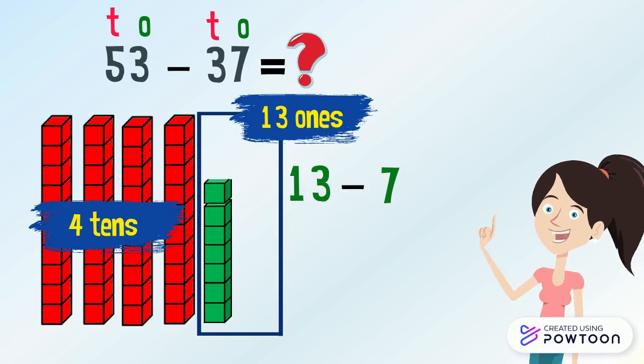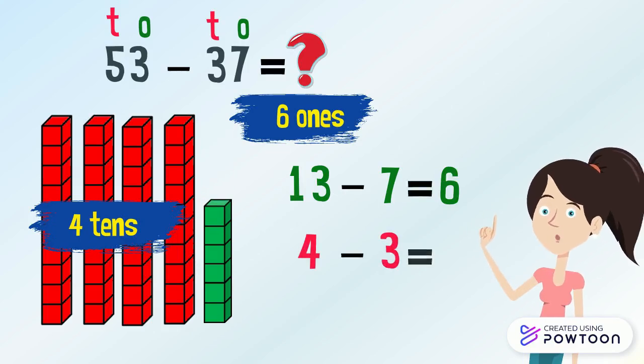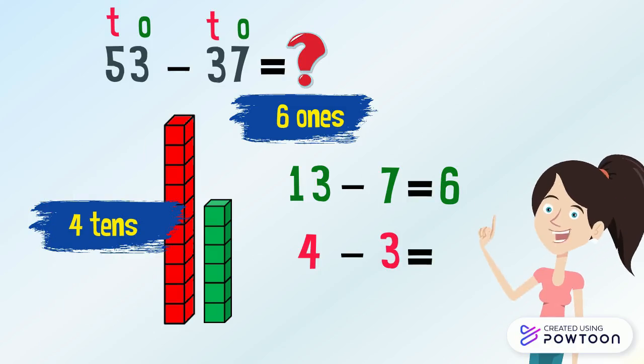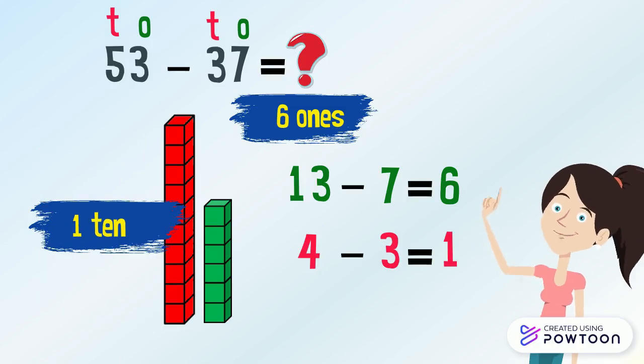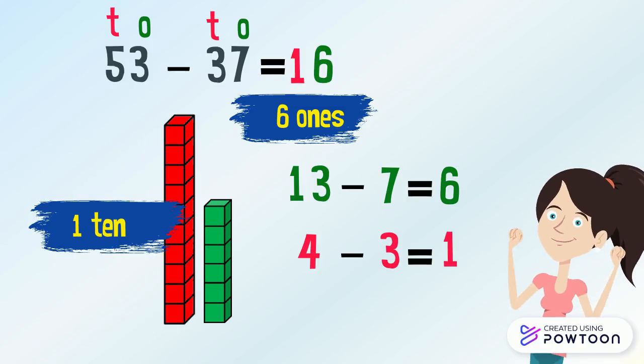Next we subtract the tens. We take away three tens from four tens. Four minus three equals one. So 53 minus 37 equals 16. Now we are going to calculate 53 minus 37 by regrouping, which means by putting the numbers in columns.